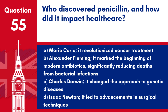Question 55. Who discovered penicillin and how did it impact healthcare? a. Marie Curie – it revolutionised cancer treatment. b. Alexander Fleming – it marked the beginning of modern antibiotics, significantly reducing deaths from bacterial infections. c. Charles Darwin – it changed the approach to genetic diseases. d. Isaac Newton – it led to advancements in surgical techniques. Answer: b. Alexander Fleming's discovery of penicillin in 1928 revolutionised healthcare by introducing the first true antibiotic, which has saved countless lives by effectively treating bacterial infections.